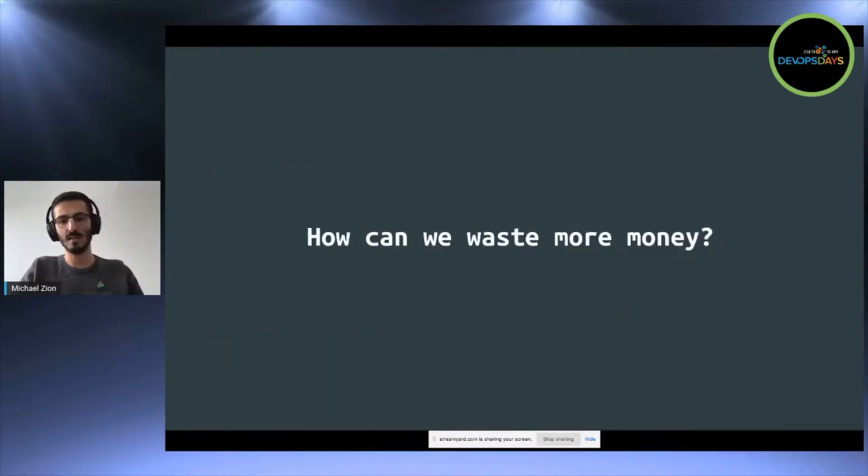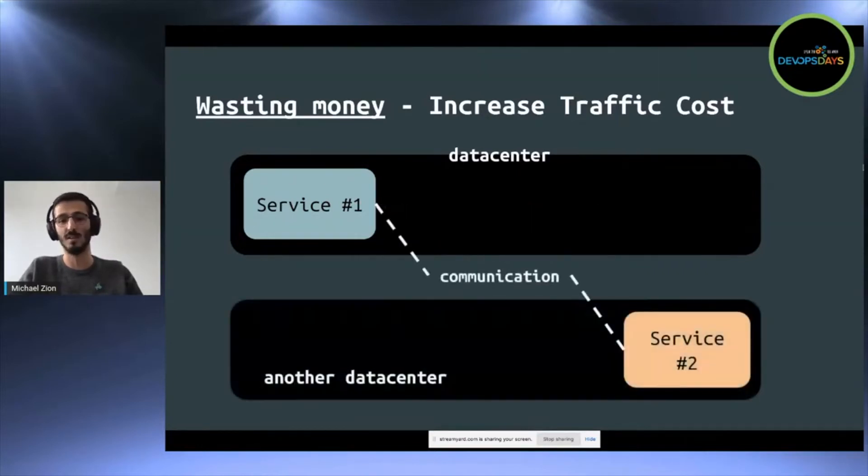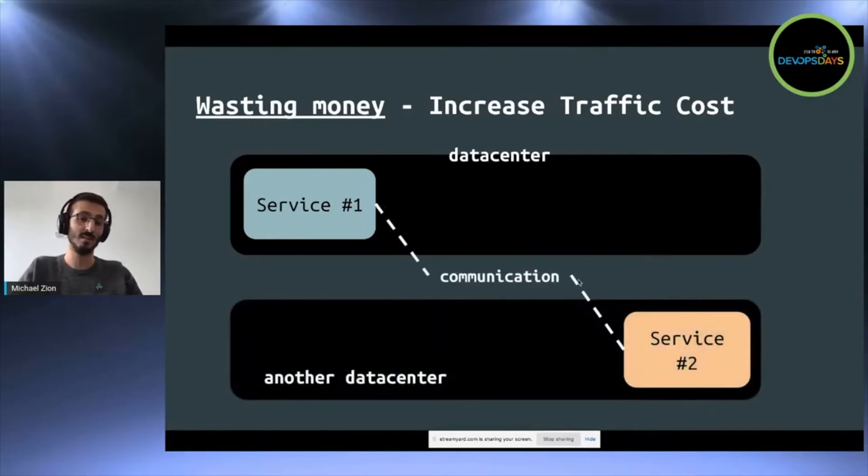So then you might ask me, but how can we waste money in order to look rich, in order to feel better? And it's a good question. So I'll show you a couple of ways. The first way is by increasing the traffic cost. Let's say you have service one talking to service two via HTTP in the same data center. What you can do is you can deploy service two in another data center. And then it triple or even quadruple the costs of the inbound and outbound traffic.